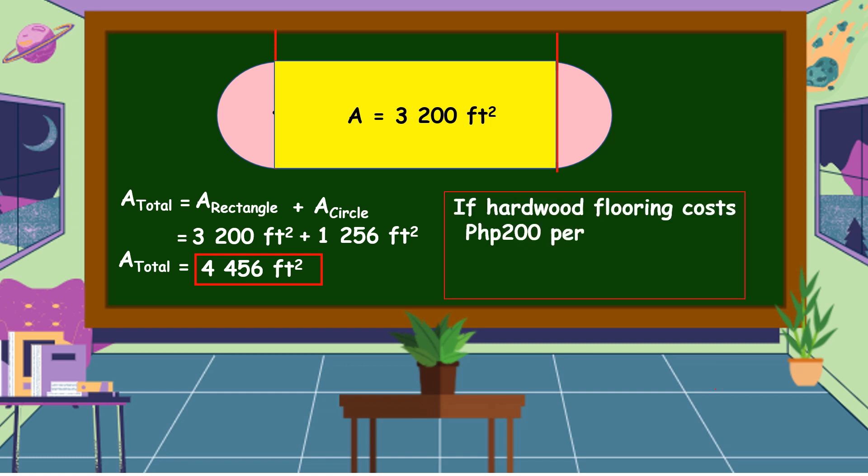If hardwood flooring costs 200 pesos per square foot, then 4,456 square feet times 200 equals 891,200 pesos.